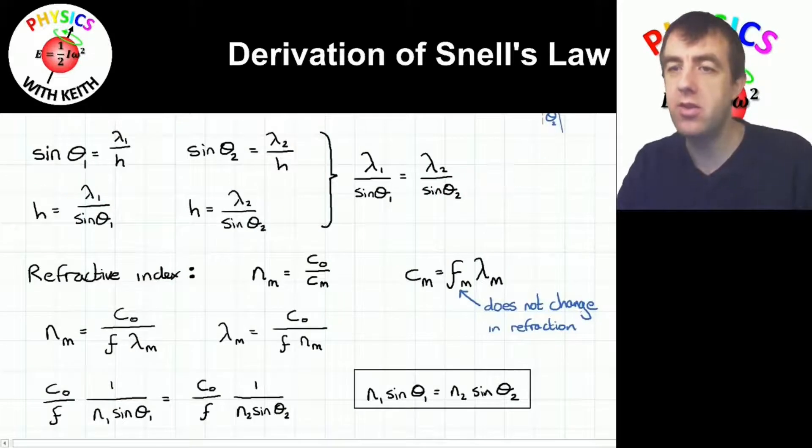So I've just scrolled down so we can see the rest of this derivation here. And we need to define the term refractive index now. So this is for optical media. A refractive index is the ratio of the speed of light in a vacuum to the speed of light in the medium. I've used the subscript m here to indicate the medium. So n subscript m is the refractive index in medium m. C subscript m is the speed of light in the medium m. And an equation we have for the speed of a wave is frequency multiplied by wavelength. So we can say that the speed of the light in medium m is equal to the frequency of light in medium m multiplied by the wavelength of light in medium m.